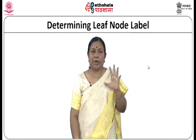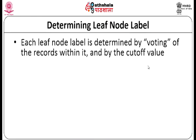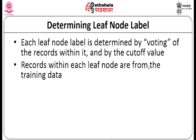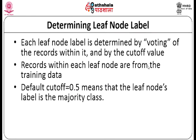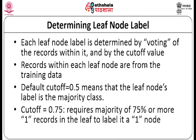Split points become nodes of the tree — circles with the split value in the centre — while rectangles represent terminal nodes where no further split is possible. The number of lines between nodes indicates the number of cases considered. To determine leaf node labels: each leaf node label is determined by voting of the records within it and by a cutoff value. For example, a cutoff of 0.5 means the majority class labels the node; a cutoff of 0.75 requires 75% or more of records to belong to one class to label it as that class.